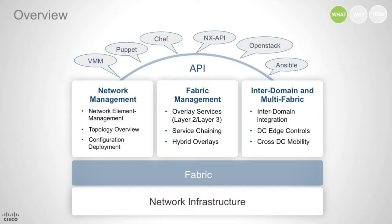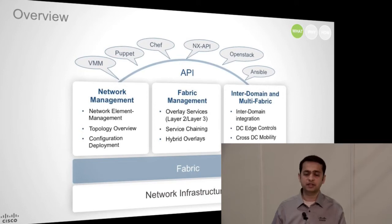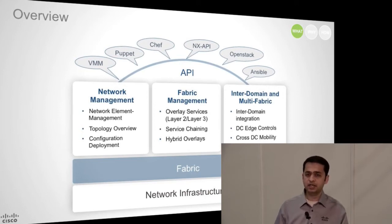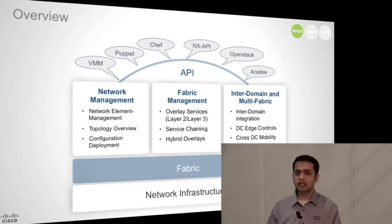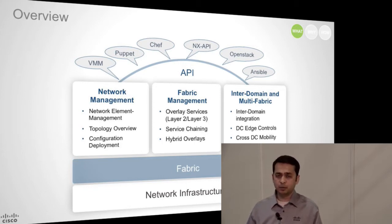One pillar provides the network management of your elements — topology overview, provisioning, configuration. The second pillar is really the fabric management that allows you to do overlay services, service chaining, hybrid overlays, and such. And finally, the last pillar is really the inter-domain support.